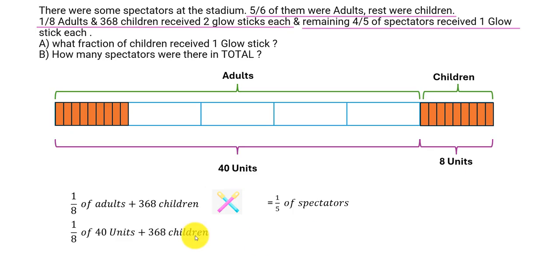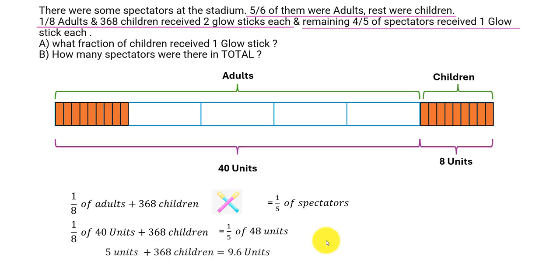Now when we write this down: one-eighth of adults in smaller units is 40 units. One-eighth of 40 units plus 368 children equals one-fifth of 48 units, because 48 is the total number of spectators. That becomes five units plus 368 children equals 9.6 units — since 48 divided by 5 is 9.6. At this stage, children would be familiar with decimals, so we can give it as 9.6 units.